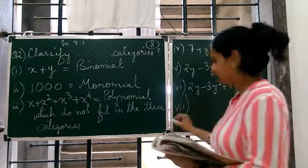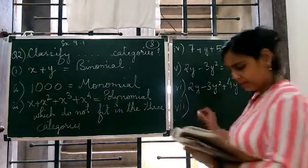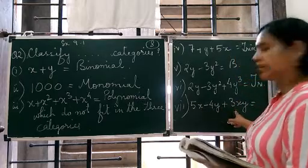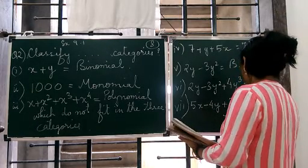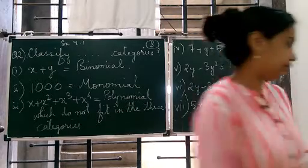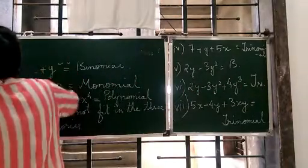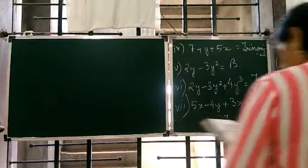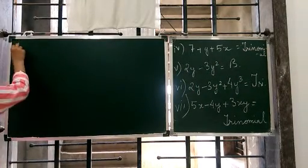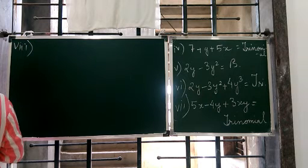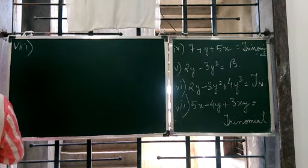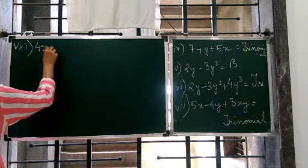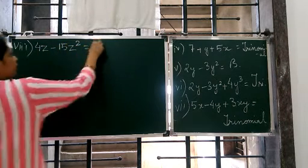Then seventh one. Which one is seventh one? Five x minus four y plus three y is one. How many? One, two, three. So again it's a trinomial. And eighth one, 5x minus 4z minus 15 z square. So it's a binomial.